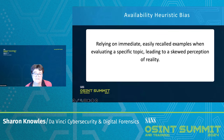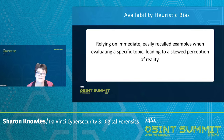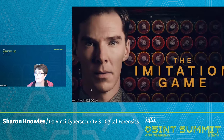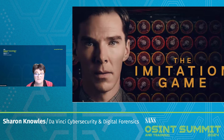Availability heuristic bias: relying on immediate, easily recalled examples when evaluating a specific topic can lead to a skewed perception of reality. If an investigator recently dealt with a phishing scam originating from a particular country, they might overestimate the prevalence of cybercrime from that country in future investigations. The movie here is The Imitation Game — analysts and decision makers prioritize deciphering codes based on recent attacks or threats, influenced by the availability heuristic, where recent or easily remembered events seem more relevant and common.